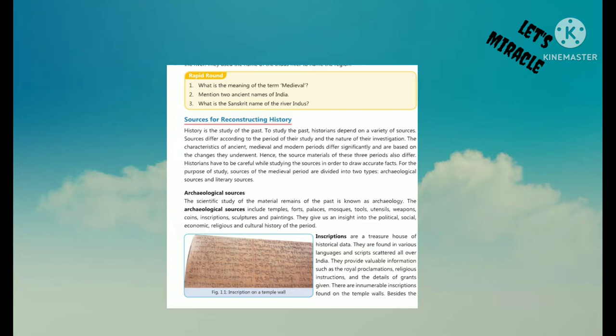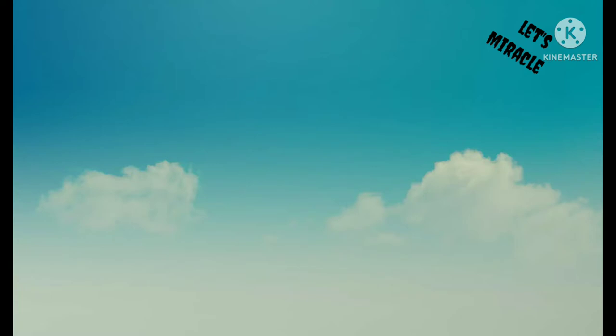Minhaj al-Siraj, a medieval scholar, used the term Hindustan in the 13th century to describe the areas of modern Punjab, Haryana and the land between two rivers — the Ganga and the Yamuna — which were part of the Delhi Sultanate. In the early 16th century, Emperor Babur used the term Hindustan to denote the geography, the natural vegetation and the culture of the inhabitants of the subcontinent. It was during the British Raj that Hindustan became synonymous with India. The present-day name India was given by the Greeks, derived from the Greek word 'Indoi', meaning the region beyond the river Indus or Sindhu, the Sanskrit name of the river.